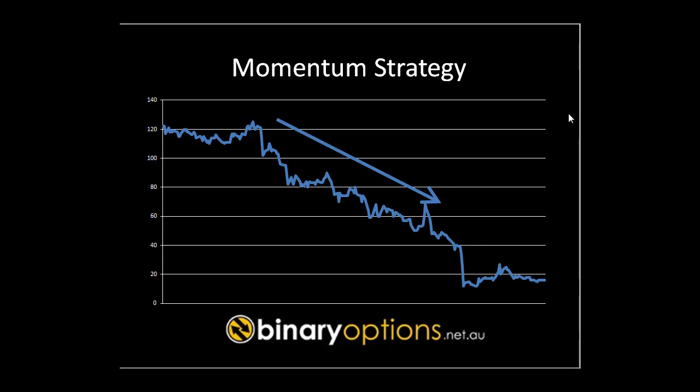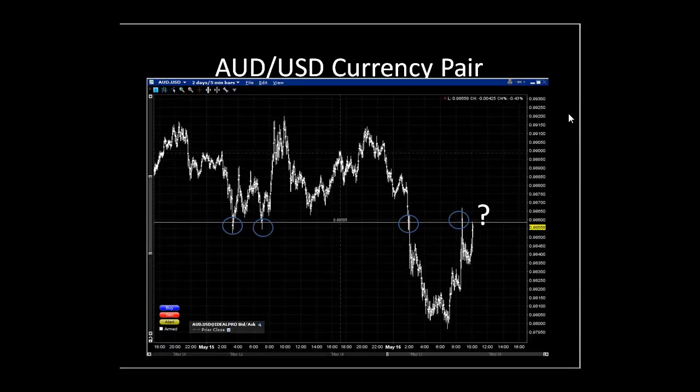What kind of forces can stop assets from moving in one direction or the other? Support and resistance. If your asset is moving down and there's a nearby support level, the support level might cause the asset to reverse direction. To know where support and resistance levels are, you need to look at the charts. Here's a chart of Australian dollar versus U.S. dollar — five-minute bars on a two-day time period — and I want to draw your attention to a horizontal line.